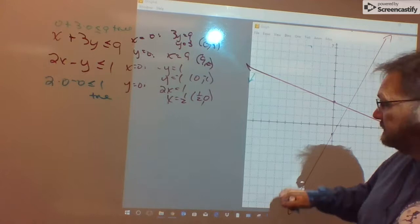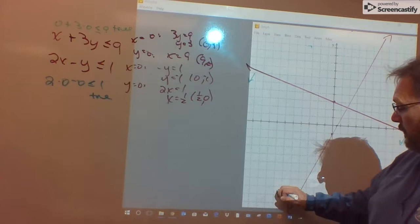So I shade that one toward the origin. Where's the origin? It's right here. It's above and to the left of the line. So I'll mark at each end to shade above and to the left of the line.